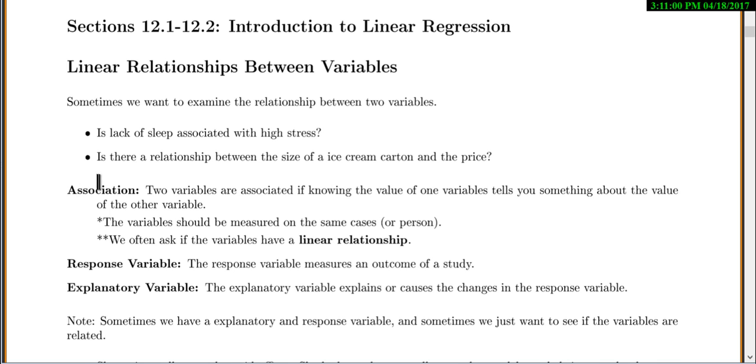Association is a key word here. We say that two variables are associated if knowing the value of one variable tells you something about the value of the other variable. Now, these variables should be measured on the same case or person. We often ask if the variables have a linear relationship. So we want to know if this relationship could be described by a line.